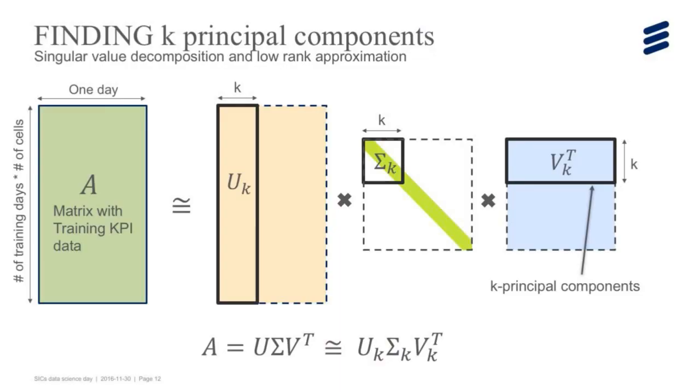We use singular value decomposition technique as a PCA algorithm. In this training matrix, we run SVD and do low rank approximation. The top K right singular vectors are the K principal components.